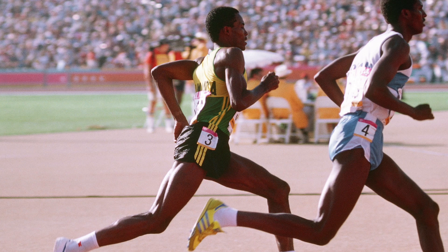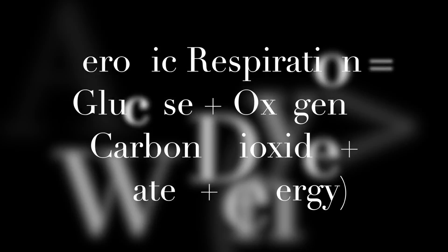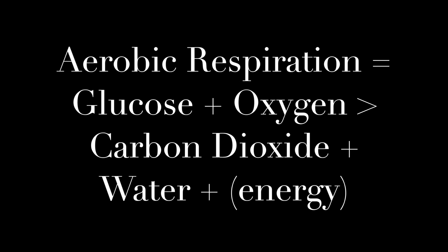The most efficient way of respiration is aerobic respiration. Aerobic respiration is respiration using oxygen. It goes on all the time in both plants and animals, and most of the reactions in aerobic respiration happen inside the mitochondria, which helps release energy.